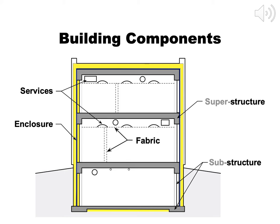The reason we break the building down into these components is mostly because they are built by different trades and almost always designed by different professionals. The superstructure would be done by a structural engineer; often there's even a specialist for the substructure. The services are done by mechanical, electrical and plumbing engineers. The enclosure is primarily the architect's responsibility, often with technical support from a building enclosure specialist or building science engineer. The fabric may be done by the architect or an interior designer.